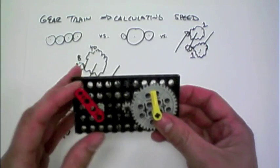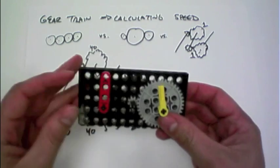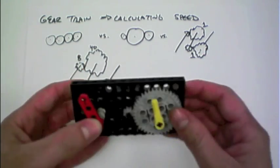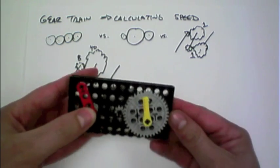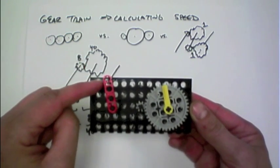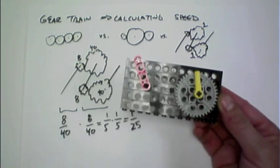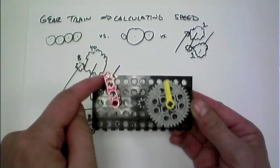So, let's test that out. Let's see if this is indeed a 1-to-25 relationship, with the 8-to-40 in the back and another 8-to-40 in the front. So, I'll turn this red crank 25 times, and we should see the yellow on the final gear go around once. So, here we go.